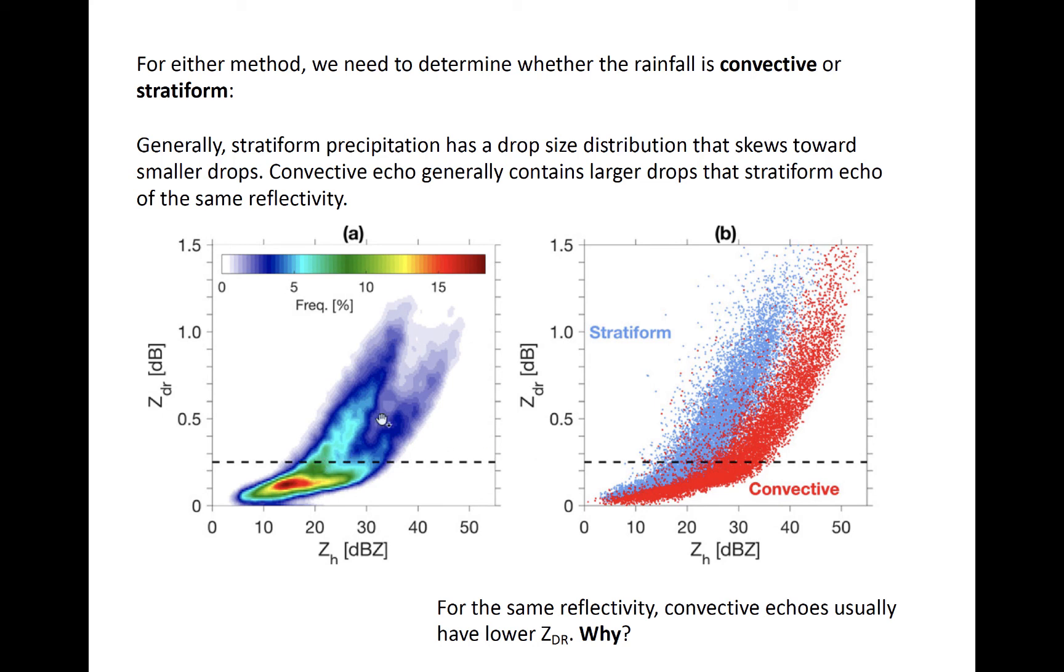And so in this example, we're splitting the distrometer data up into stratiform and convective, but next we're going to look at how to do this with radar.